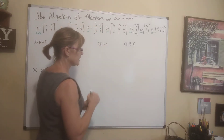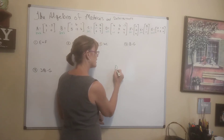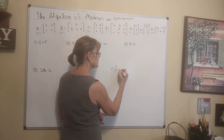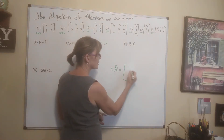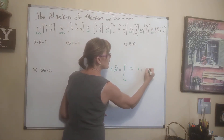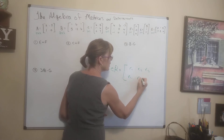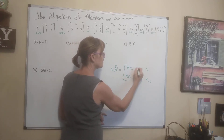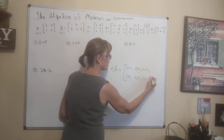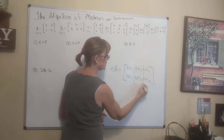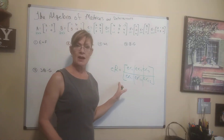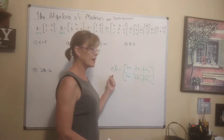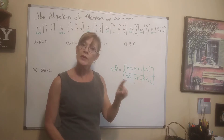If you take a matrix R and multiply it by a scalar C, that number just gets multiplied to every element in the matrix. Importantly, it does not change the size of matrix R — it was 2 by 3 before, and after multiplying by the scalar it's still 2 by 3.